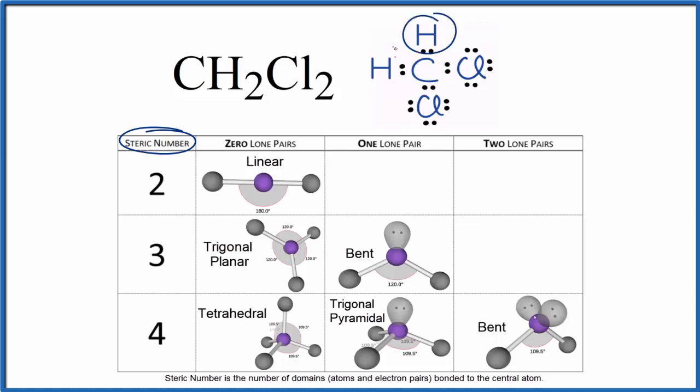We have one, two, three, four things attached to the central carbon. Steric number of four, and there aren't any lone pairs. We have zero lone pairs. If we look at the carbon, all of the electrons around the carbon are involved in chemical bonds. So we don't have any lone pairs.